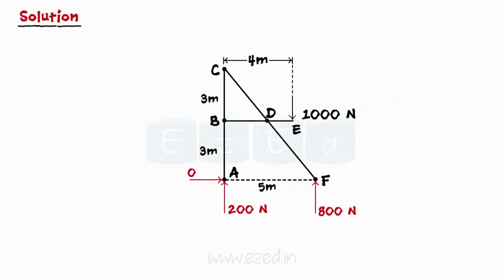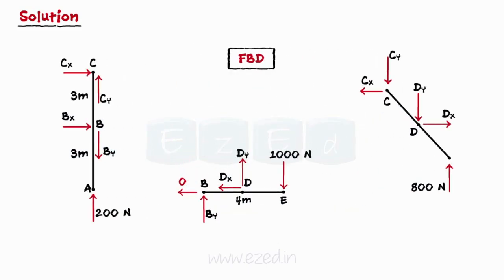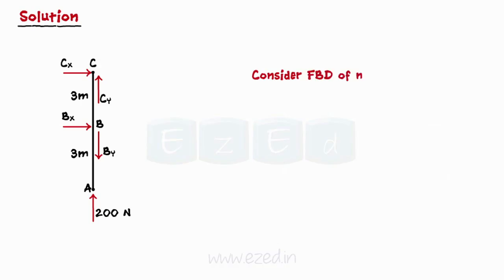We will now dismember the frame and draw free body diagrams of all the members separately. At the internal connection, that is the pin, the directions of components of the reaction are assumed on any one of the members, and the opposite direction is assumed on the other member. Now consider the free body diagram of member CBA.